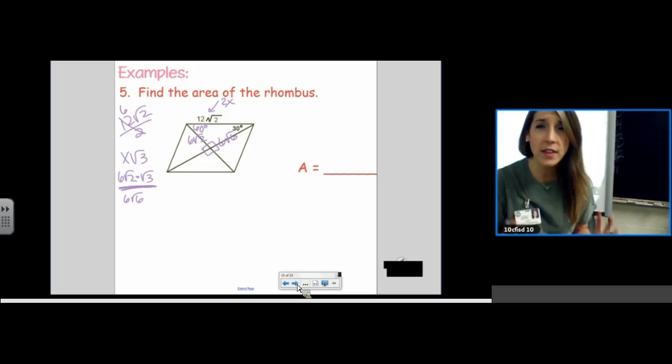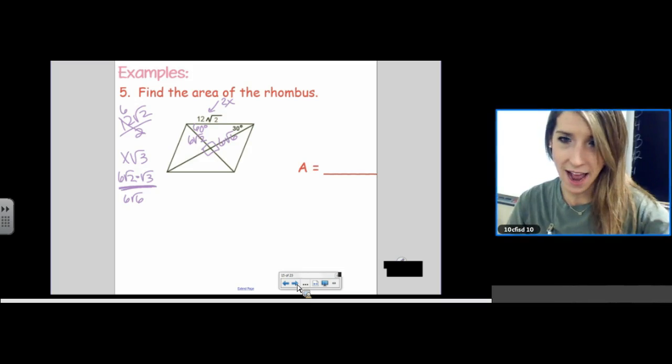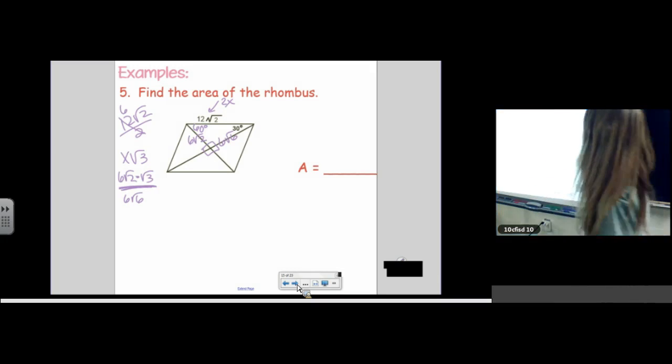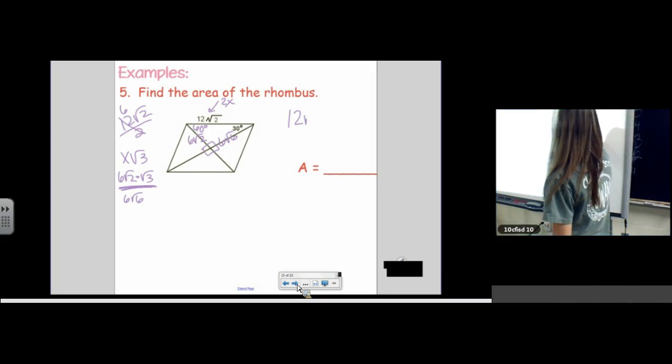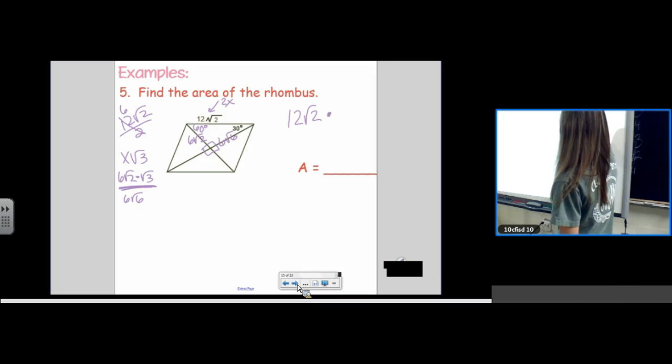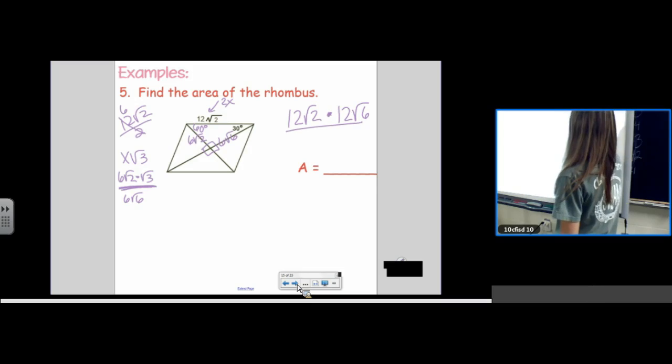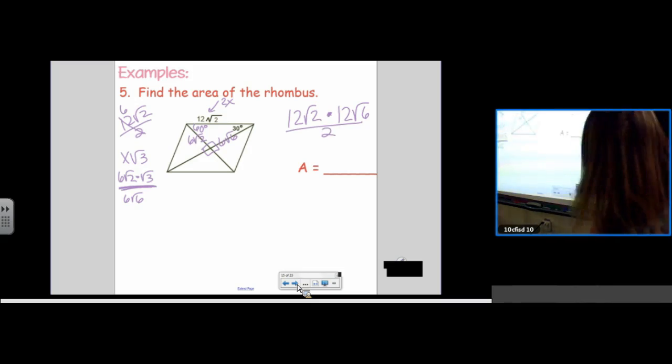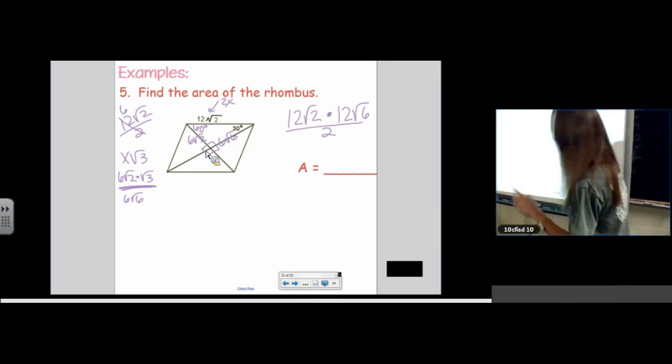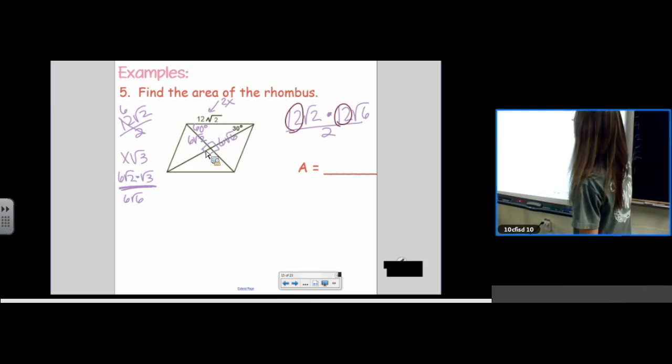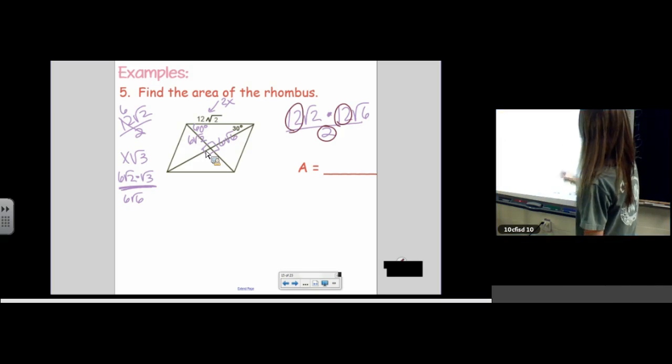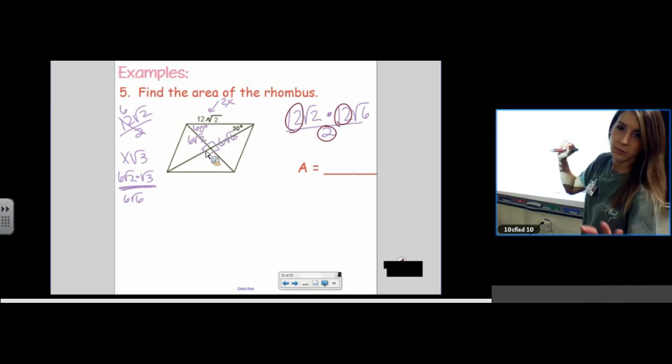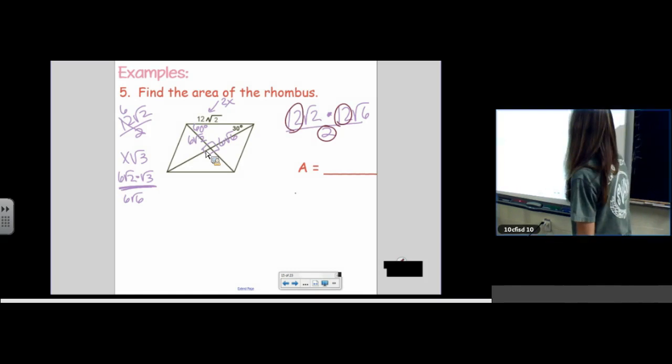Those are not the diagonals. Those are just half of the diagonals. So, be careful. Diagonal 1 times diagonal 2 divided by 2. What I do personally is I just do all the integers first. And, I fully simplify them. 12 times 12 divided by 2. You got it? 72. So, that's 72.